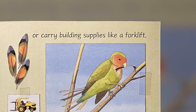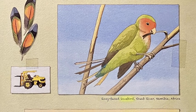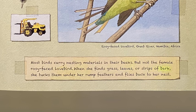Or carry building supplies like a forklift. Most birds carry nesting materials in their beaks, but not the female rosy-faced lovebird. When she finds grass, leaves, or strips of bark, she tucks them under her rump feathers and flies back to her nest.